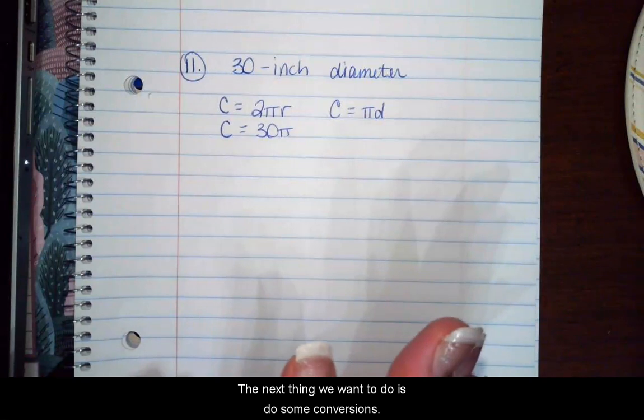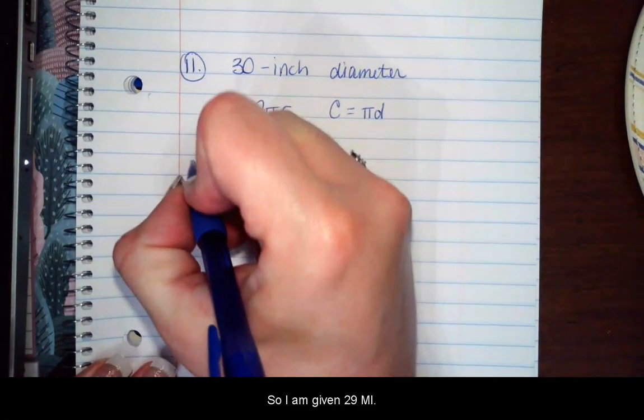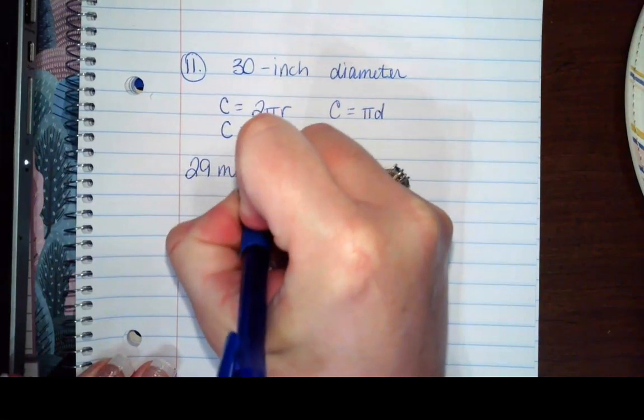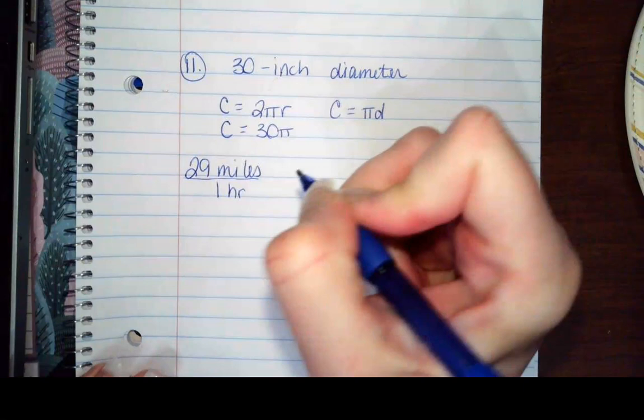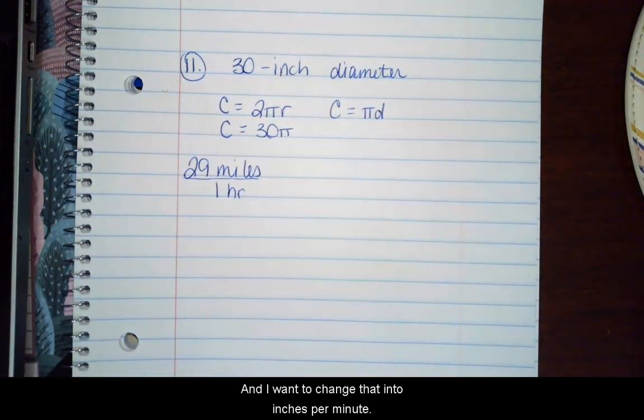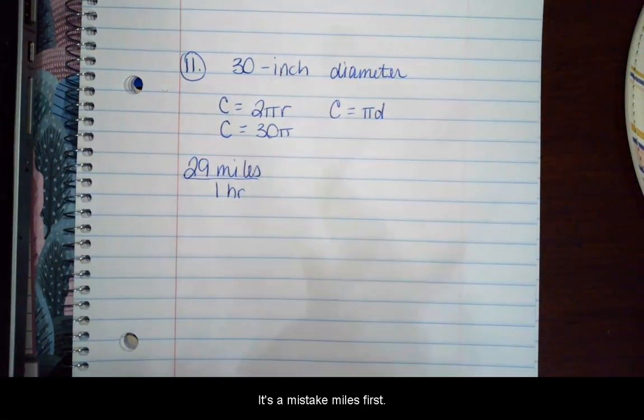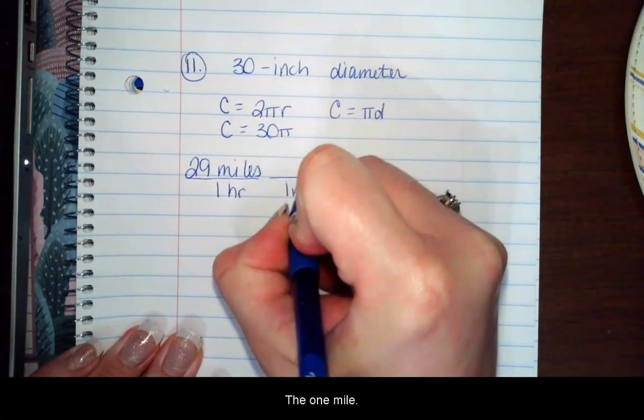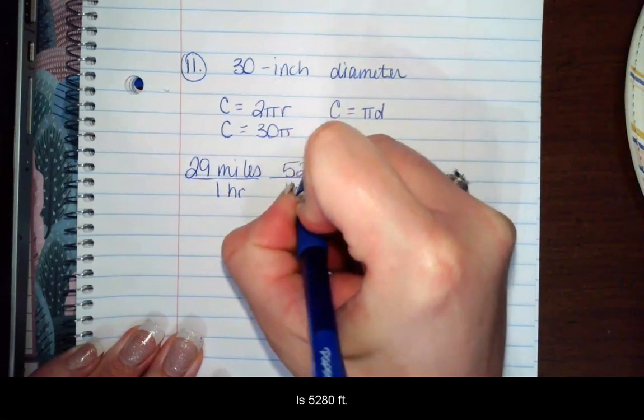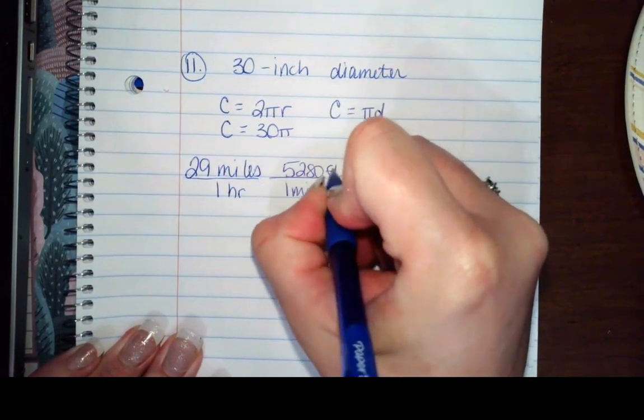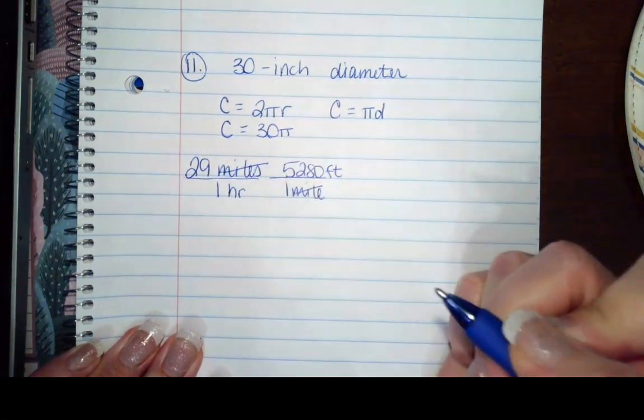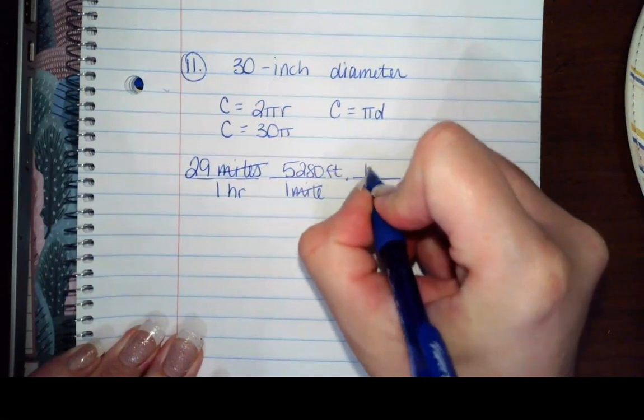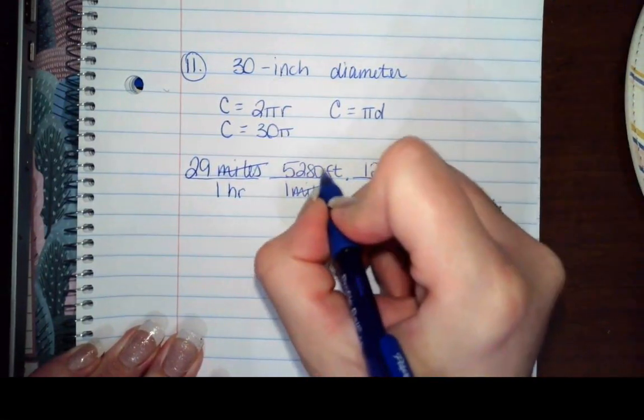The next thing we want to do is do some conversions. So I am given 29 miles per one hour, and I want to change that into inches per minute. So one mile is 5,280 feet, so the miles are going to cancel. And then one foot is 12 inches, so my feet cancel.